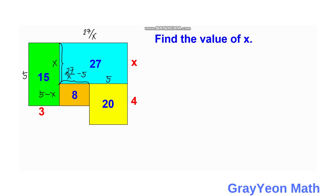Next, we focus on the orange rectangle. As we have represented, since the area is 8, and the sides are 27 over x minus 5, and 5 minus x, we can say that (27 over x minus 5) times (5 minus x) is equal to 8.